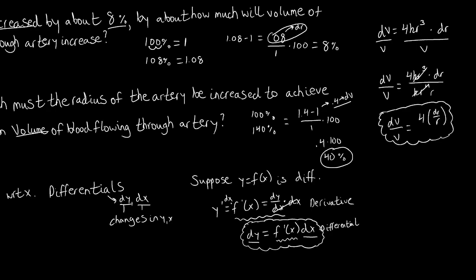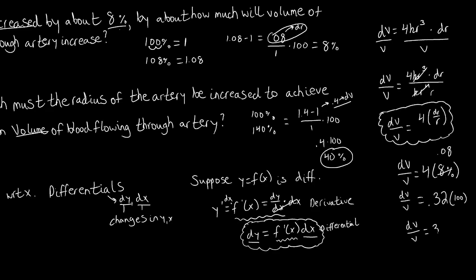For the first question, the relative change of radius is 8%, so the relative change of volume equals 4 times 8%. Converting 8% to a decimal gives 0.08, and 4 times 0.08 is 0.32. To express this as a percent, we multiply by 100, giving us a 32% change in volume.